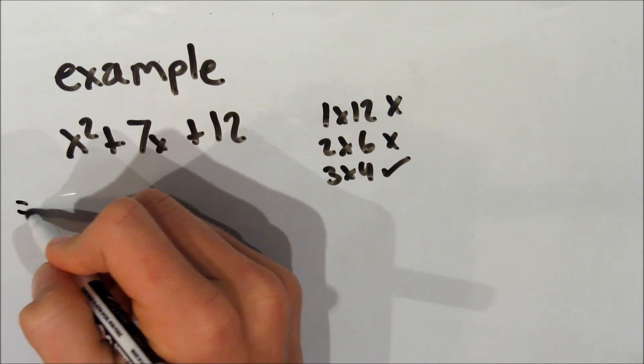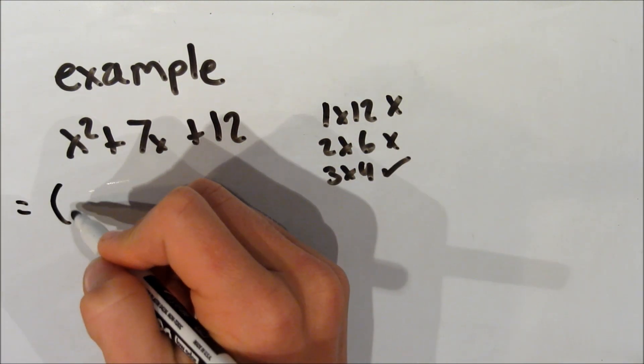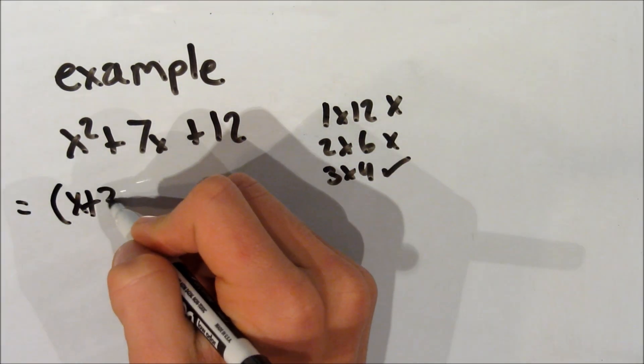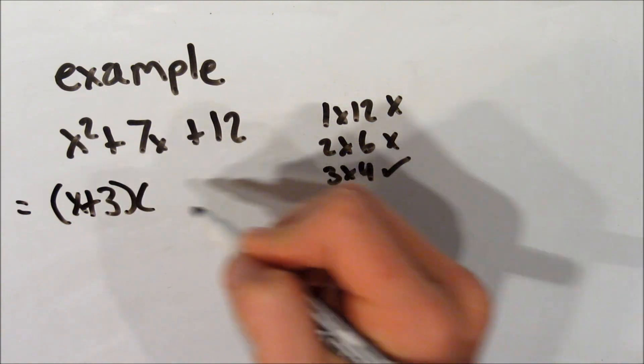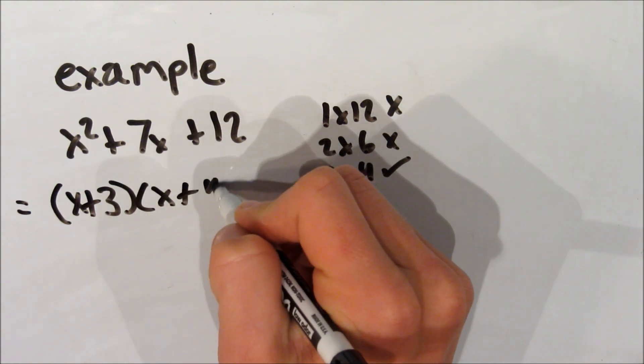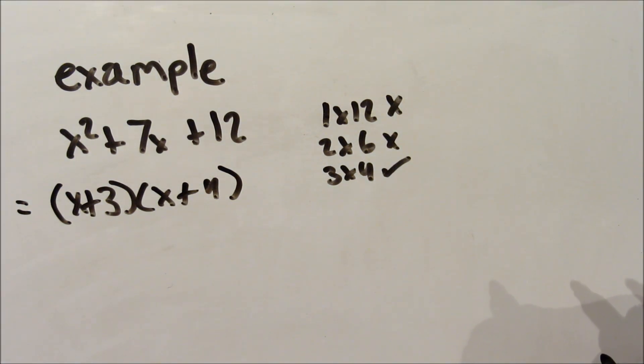So we know those are going to be our e and f factors that we talked about before. So now we can go ahead and write it down, simply with the x, and then plus our e and f factors that we just found. So that was simple enough.